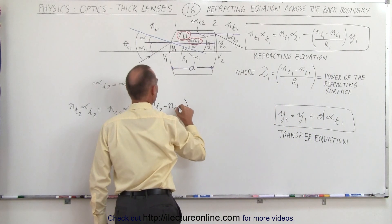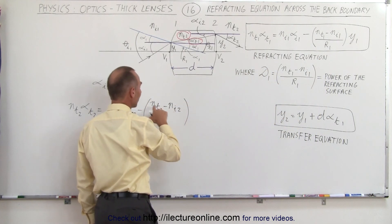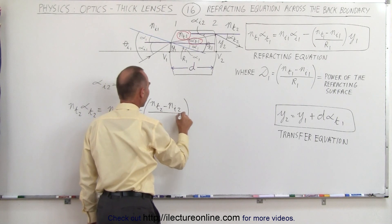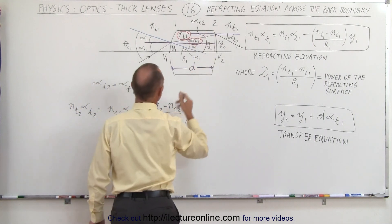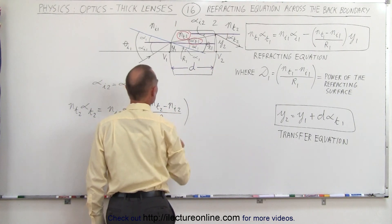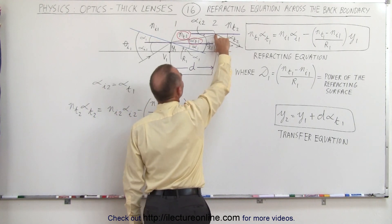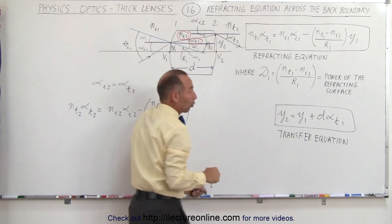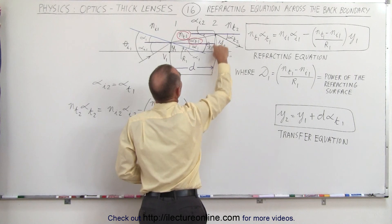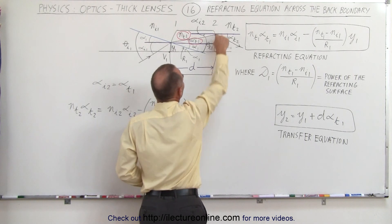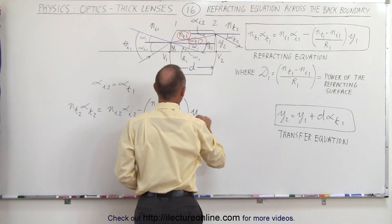minus the index of refraction of where we came from. That would be NI2, that would be inside the lens, that would be outside the lens, divided by the radius of curvature of this side of the lens, which would be called R2. And then we multiply times the height above the optical axis, or it could be below the optical axis,